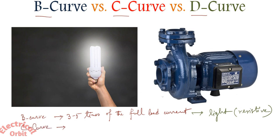Next is C curve. C curve is where the MCB trips at 5 to 10 times of the full load current. And what is application? It is inductive load.